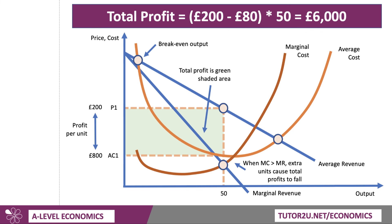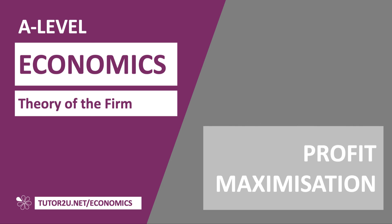Go back to our diagram here. You can see, for example, that beyond the output of 50 units, marginal cost is bigger than marginal revenue, and therefore any extra unit sold beyond 50 would cause the total profit of the business to fall. So profit maximisation occurs where marginal cost equals marginal revenue. And oftentimes you'll get some numerical examples to think about, and hopefully be able to do those.